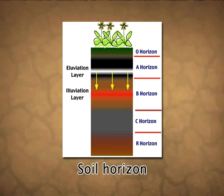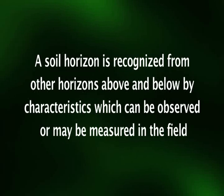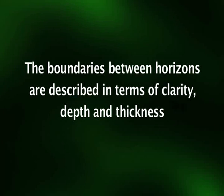A soil horizon is recognized from other horizons above and below by characteristics which can be observed or measured in the field. The criteria normally used are organic matter content, color, texture, structure, consistence, presence of cutins, cementation, stoniness, paints, carbonates, soluble salts, artifacts, biological features, roots, and pH value.